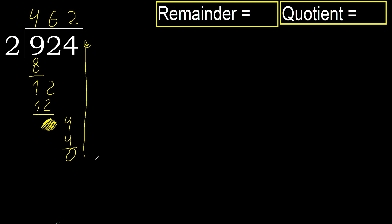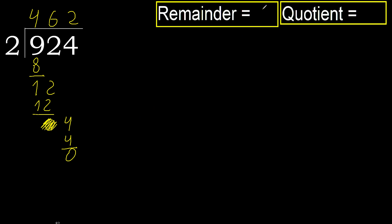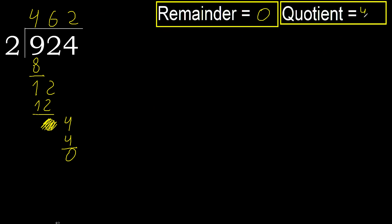There is no next number, therefore finish it. Therefore, 924 divided by 2 is done — the answer is here.